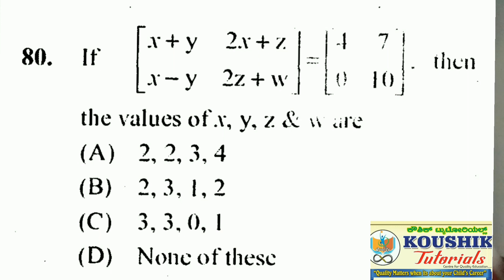Option A: 2, 2, 3, 4. Option B: 2, 3, 1, 2. Option C: 3, 3, 0, 1. And Option D: none of these. This question carries 2 marks. It is for PGCT MCA.